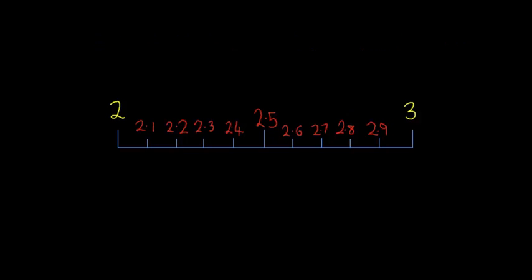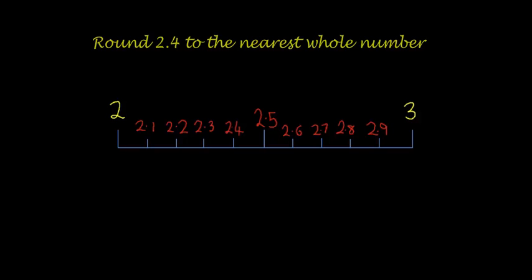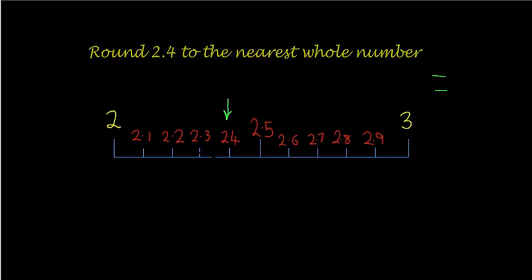Let's do another example. This time round 2.4 to the nearest whole number. I kept the same two ends, 2 and 3, just to make life quicker. Now we can quickly see 2.4, which is here, just below halfway, and therefore it is slightly nearer to the 2 than to the 3. So rounding 2.4 to the nearest whole number is equal to 2.